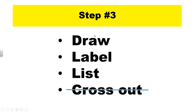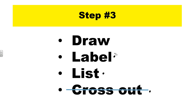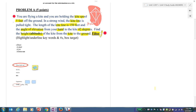Notice the height of all the numbers and key phrases — that's called filtering. Next step: you attempt to draw the diagram, label the diagram, list any additional information, and cross items out as you account for them. Draw, label, list, cross out.